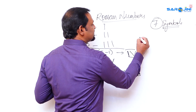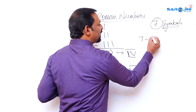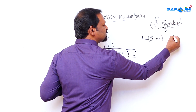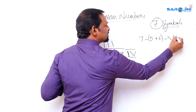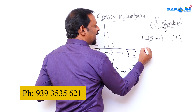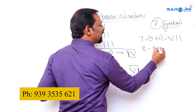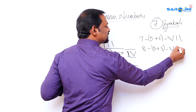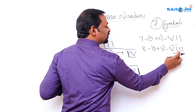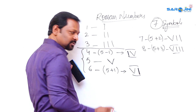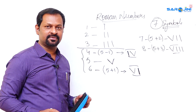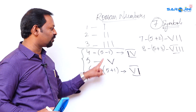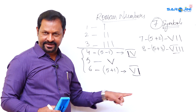Continuing: seven is five plus two, written as VII. Eight is five plus three, written as VIII. As mentioned, you can repeat a symbol up to three times but not more. So one through eight in Roman are: I, II, III, IV, V, VI, VII, VIII.